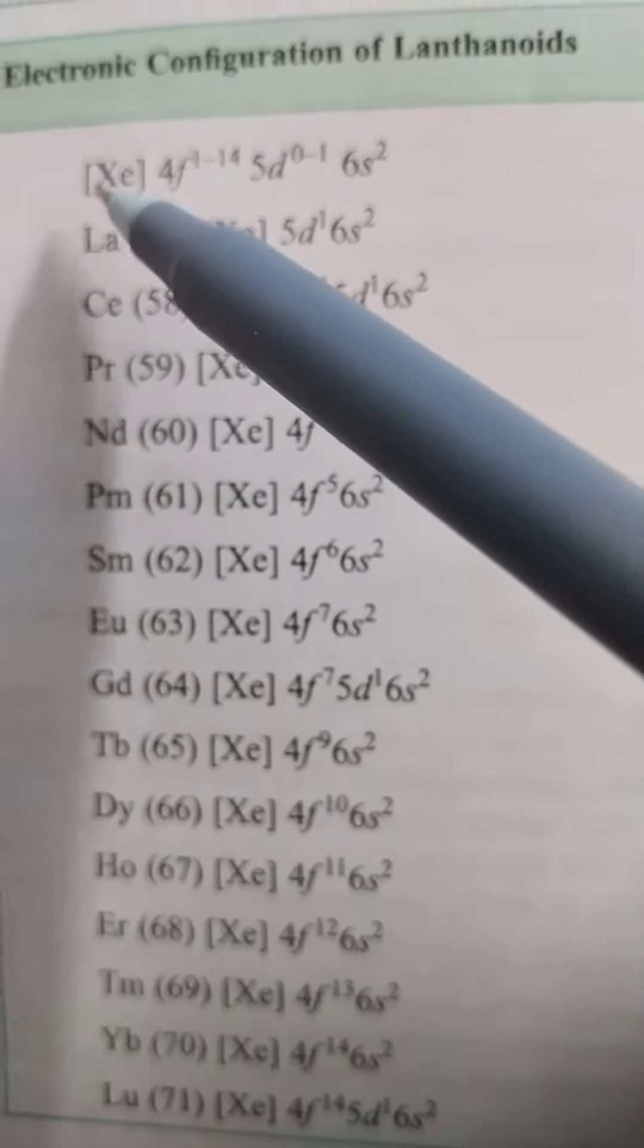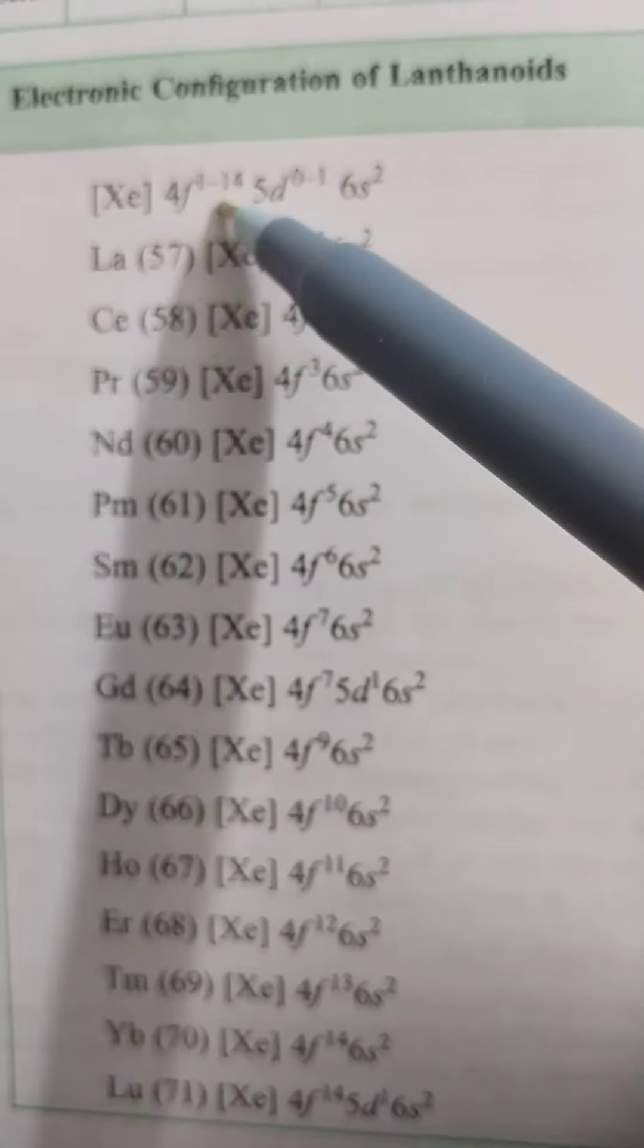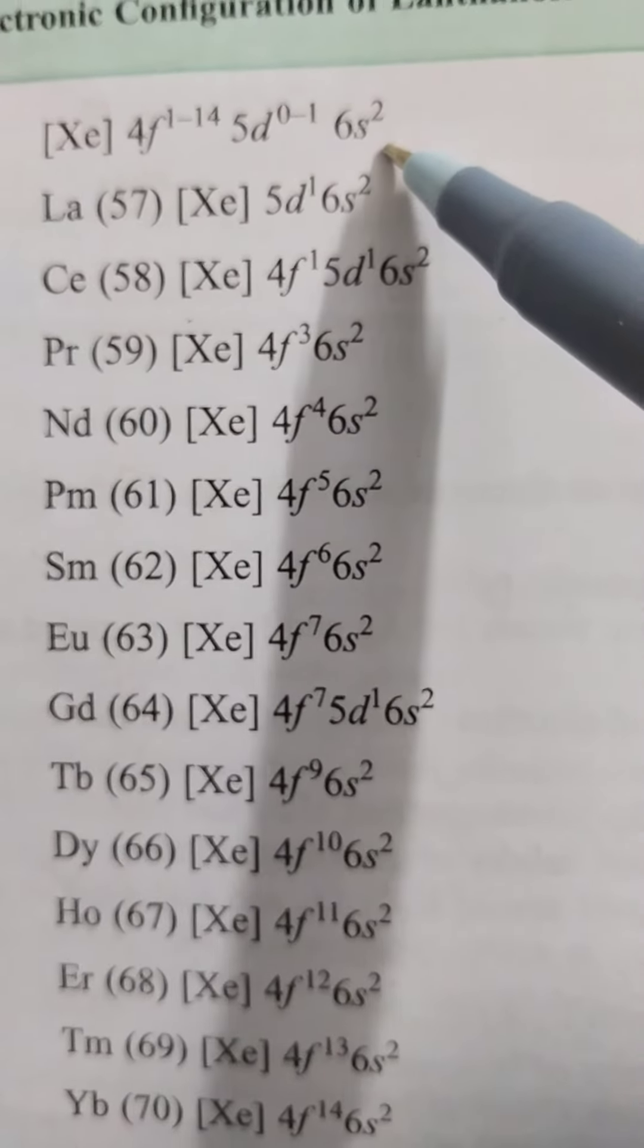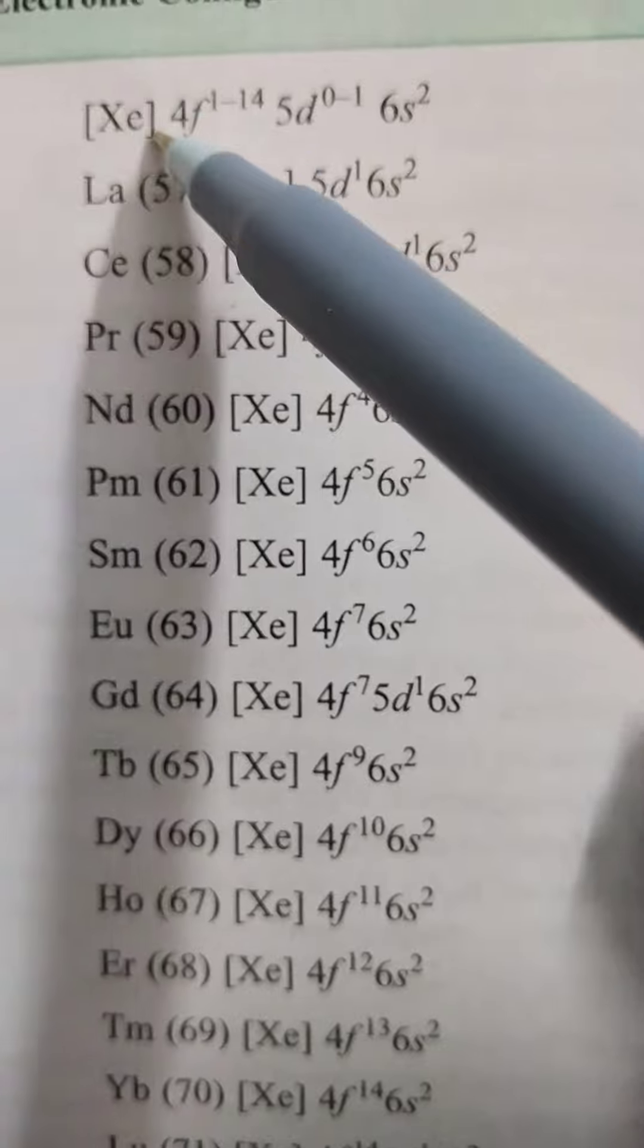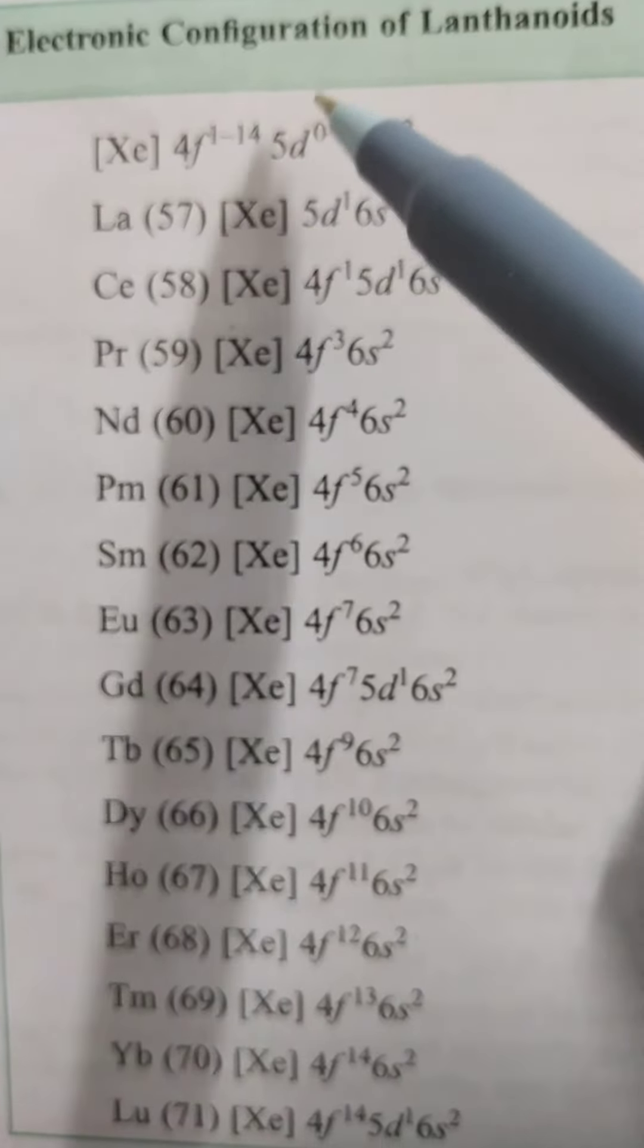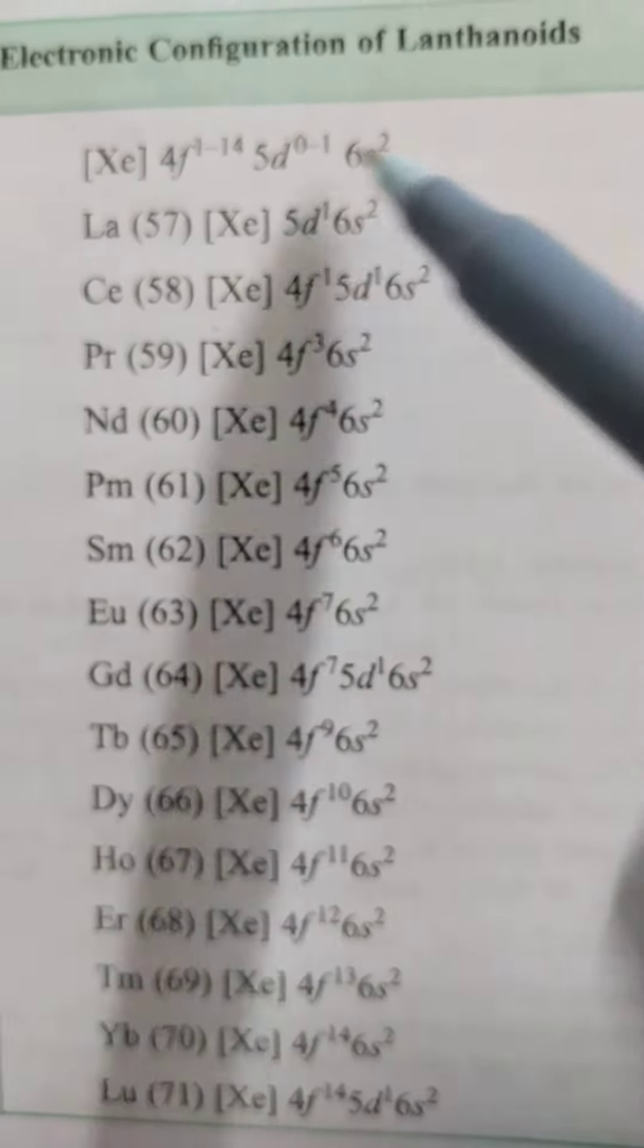The configuration we can write xenon 4f^1-14 5d^0-1 6s^2 is the configuration of lanthanoid elements. If it is actinoid, xenon 5f^1-14 6d^0-2 7s^2 actinoid.